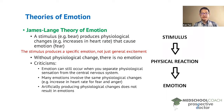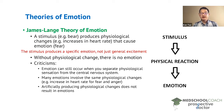Second, many emotions involve the same physiological changes. When people are angry or when they are afraid, they will both have an increase in heart rate. So it's hard to explain how different sets of physiological changes can produce different emotions when different emotions seem to have the same physiological changes.